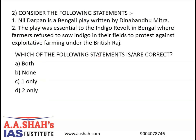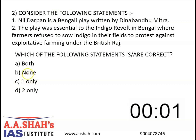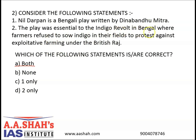Next question. Question number two. Consider the following statements. Number one: Neel Darpan is a Bengali play written by Deena Bandhu Mitra. Number two: The play was essential to the indigo revolt in Bengal, where farmers refused to sow indigo in their fields to protest against exploitative farming under the British Raj. Which of the following statements is or are correct? A: Both. B: None. C: One only. D: Two only. The correct answer is A — Both. Both statements are correct. Neel Darpan was a Bengali play written by Deena Bandhu Mitra, and the play was very essential to the indigo revolt in Bengal because farmers had refused to sow the indigo crops as a mark of protesting against the exploitative farming under the British Raj system.